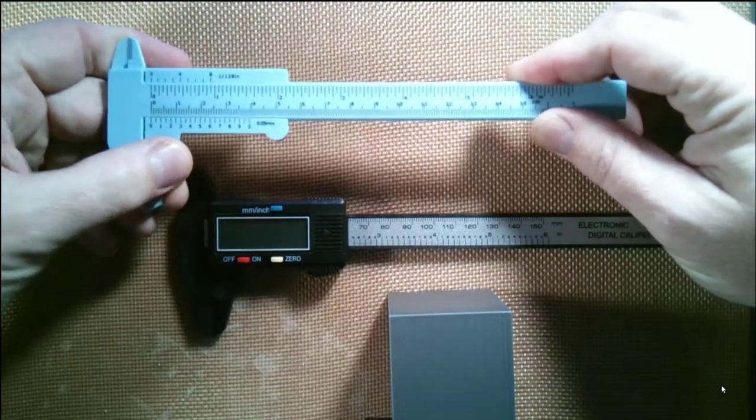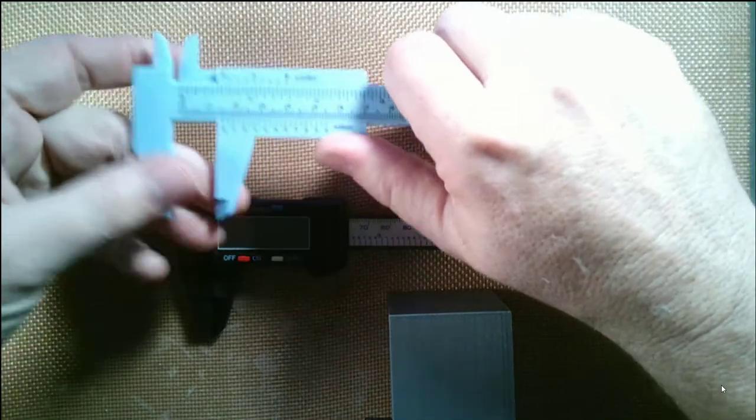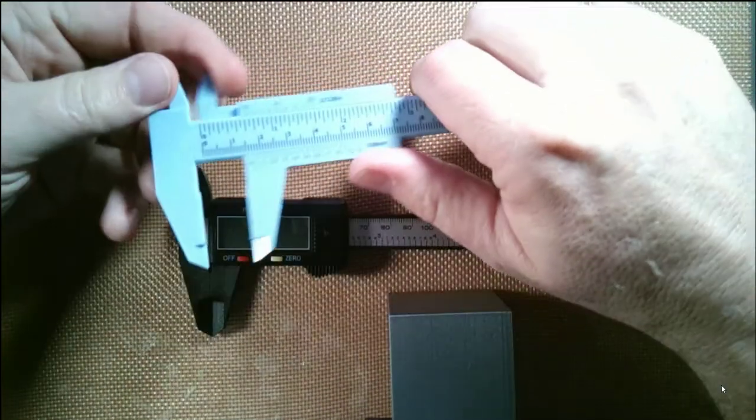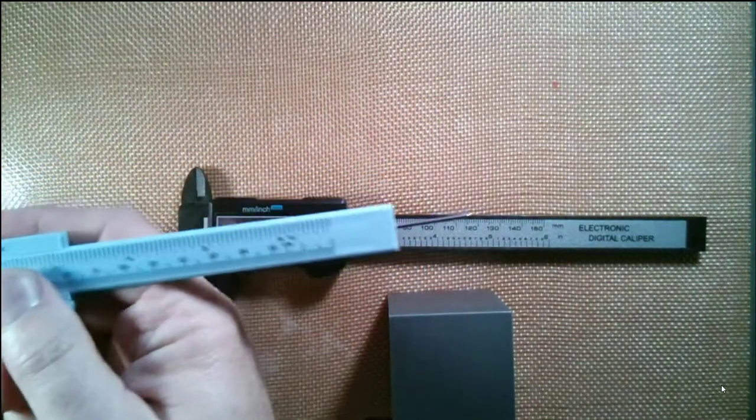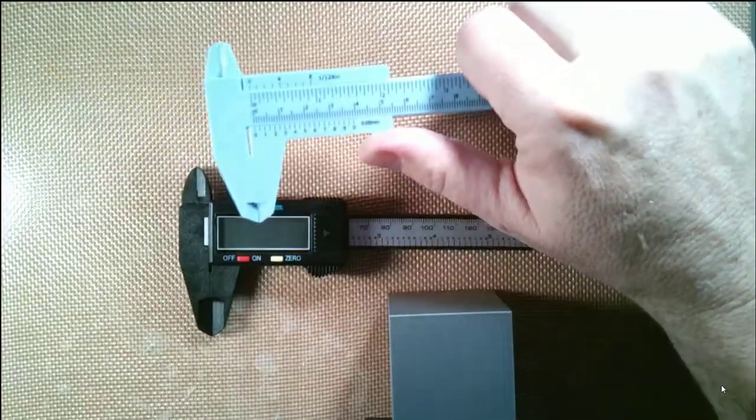The plastic analog calipers look a little bit harder, but they really work the same way. You can still use the jaws for measuring the outside of something, the jaws for measuring the inside, and the post for measuring depth. What makes these look a little bit trickier...